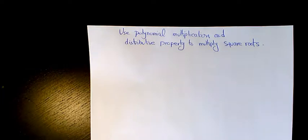What's up guys, this is Massey, welcome to my channel. In this video I want to talk about using polynomial multiplication and distributive property to multiply square roots. Basically what we do is we use distributive property to multiply expressions with square roots, and it means that we first distribute it and then simplify the square roots if it's possible.